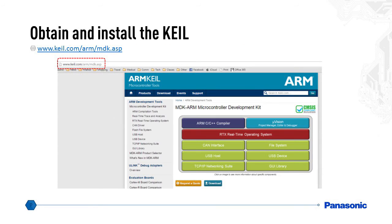To obtain the Keil, go to www.keil.com/arm/mdk.asp. Click on download. After the download has completed, double click on the file you just downloaded, follow the instructions, and keep the default settings.